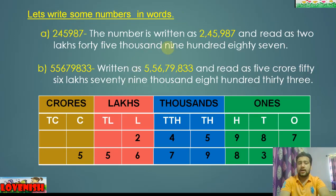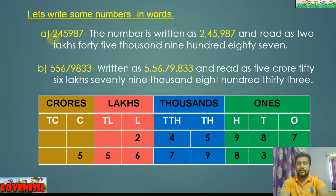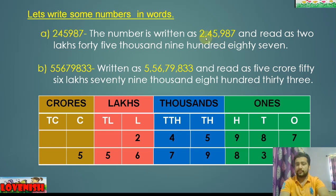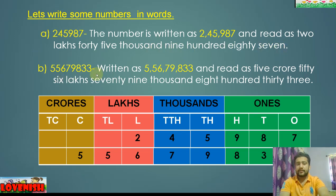Our topic covers big numbers. Now you are in fifth standard, so let us write some numbers in words. How do we write a number in words? First comes the ones group, then thousands, then lakhs. For example, this number reads as: two lakh forty-five thousand nine hundred eighty-seven.